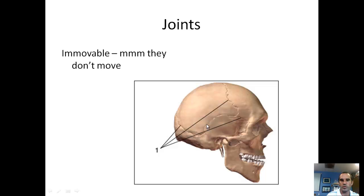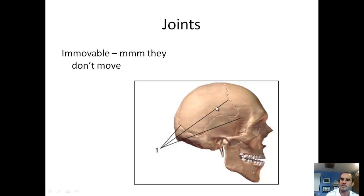When you're young and developing, the skull is actually cartilage and the bone plates haven't fused together. As you reach adulthood, those bone plates fuse together. So there is a joint there — it just doesn't move. There's no flexibility.